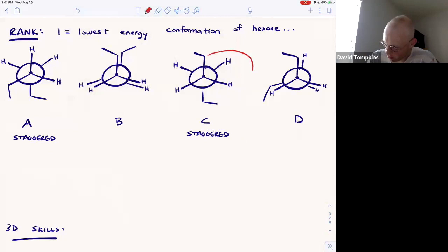Specifically, C has the large ethyl groups anti, minimizing steric strain, while here in the gauche conformation, or 60 degrees from one another, are the ethyl groups. So the lowest overall energy is staggered anti, and then staggered gauche.